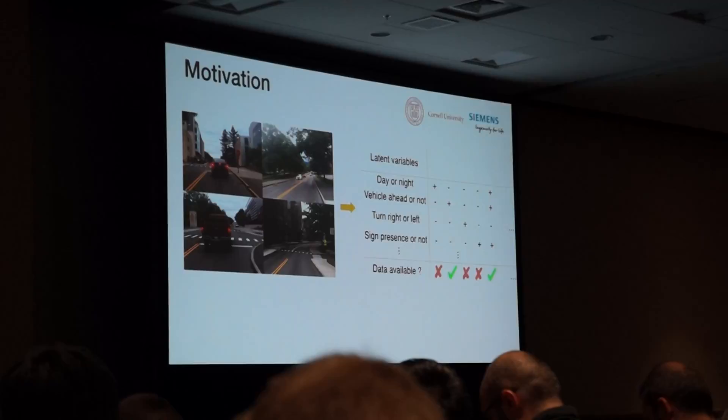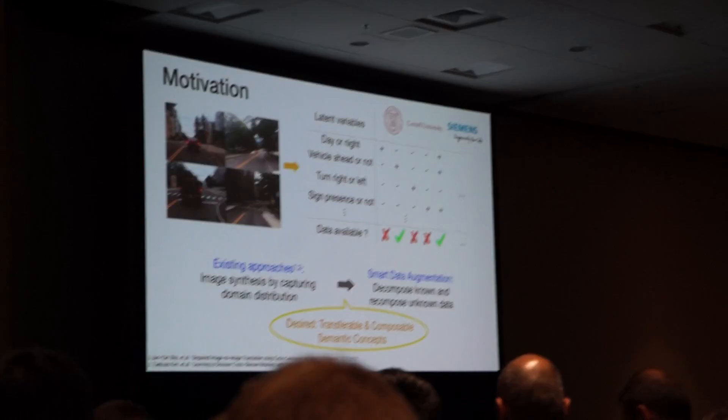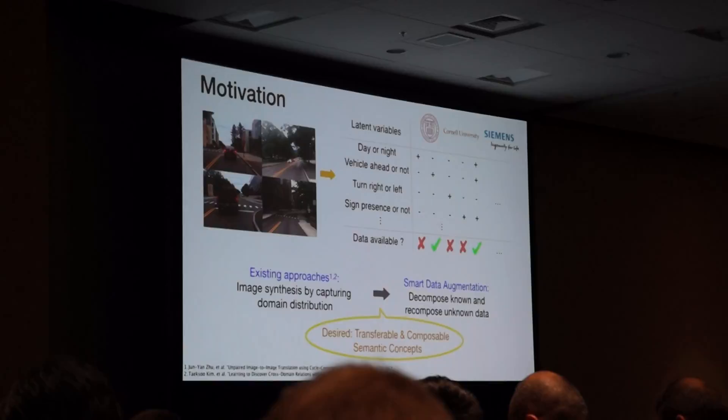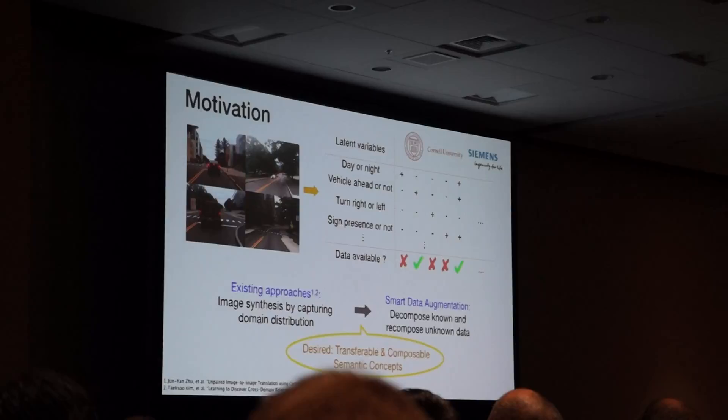While existing GAN-based approaches have demonstrated impressive image synthesis performance and capturing domain distributions, such learned mappings may not be easily transferable to different input distributions without retraining, and therefore may lead to weak compositionality.